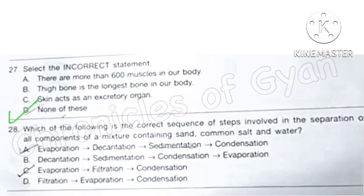Question 28: Which of the following is the correct sequence of steps involved in the separation of all components of a mixture containing common salt and water? Common salt is soluble in water but sand is not soluble in water. So we will need to first separate out sand. So we would be using the process of filtration or decantation to separate sand first. After the separation of sand we will move on to evaporation. And then move on to the process of condensation. So option D: Filtration, evaporation, condensation is the correct answer. If I am wrong here, please do correct me in the comment box.